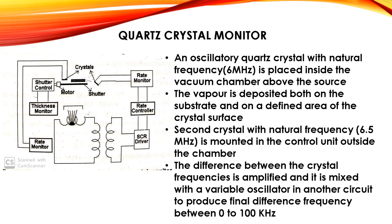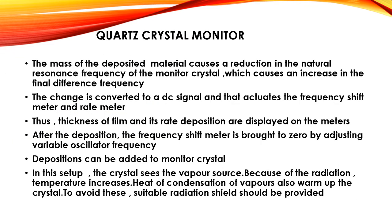In the schematic diagram of the quartz crystal monitor, an oscillatory quartz crystal with its natural frequency is placed inside the vacuum chamber above the source. The vapor is deposited both on the substrate and on a defined area of the crystal surface. A second crystal with a natural frequency of 6.5 MHz, close to the first, is mounted in the control unit outside the chamber. The difference between the crystal frequencies is amplified and mixed with a variable oscillator to produce a final difference frequency between 0 to 100 kHz. The mass of deposited material causes a reduction in the natural resonance frequency of the monitor crystal.